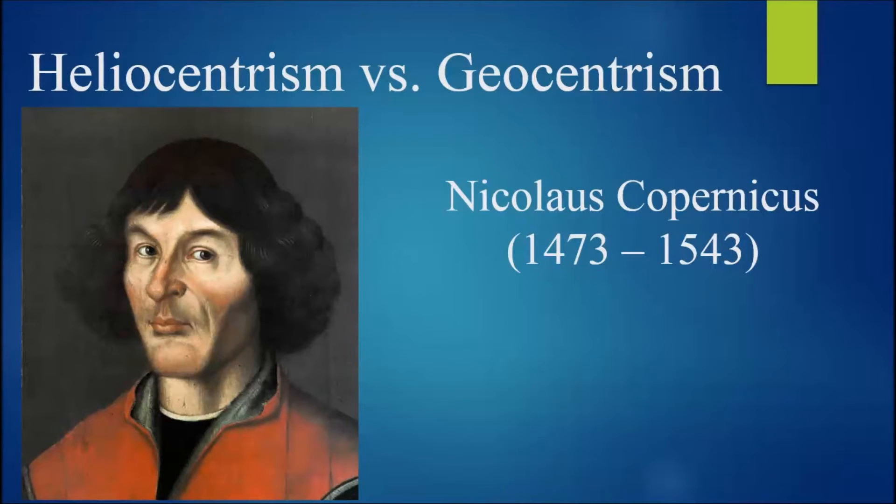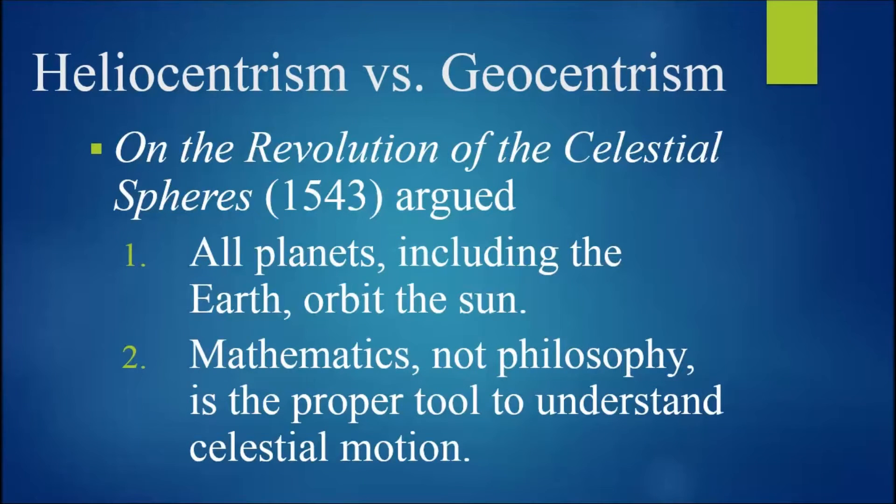Now, one of the first to challenge Aristotelian and Ptolemaic ideas was the mathematician and astronomer, Nicholas Copernicus, who lived from 1473 to 1543. His On the Revolution of Celestial Spears, which was published very shortly before his death, argued that all planets, including the earth, orbit the sun, and that mathematics, rather than philosophy, is the proper tool to understand celestial motion.